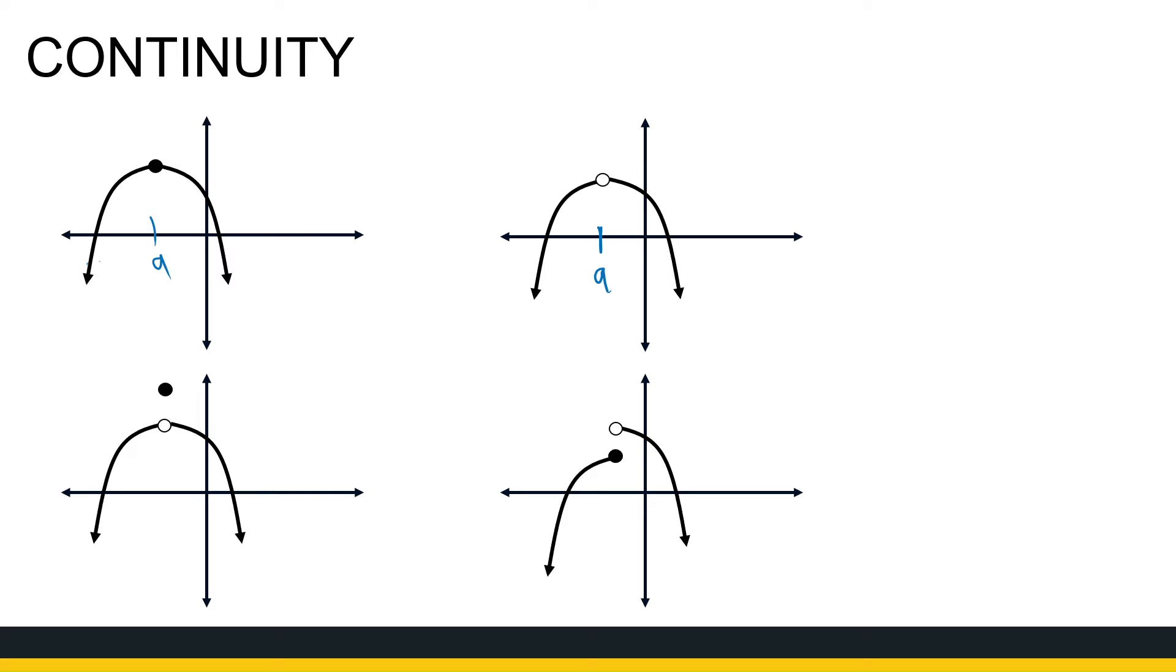If I move on to the next one, here at a there's just a gap in my function. We've seen examples of functions like that with just a hole, one point where the function is not defined. I've got to lift up my hand and jump across this value a. That one's not continuous.